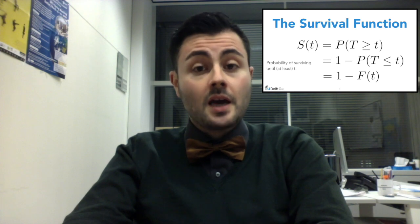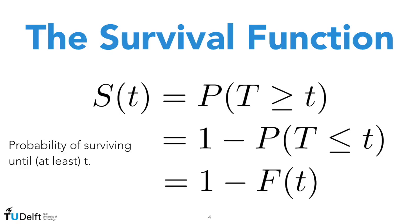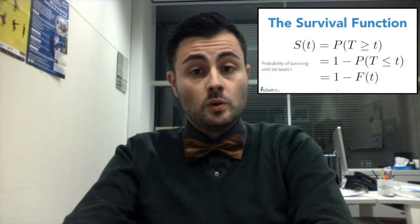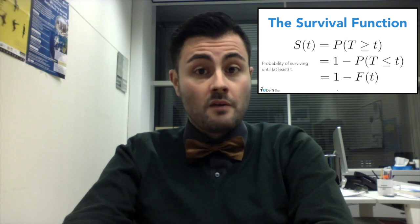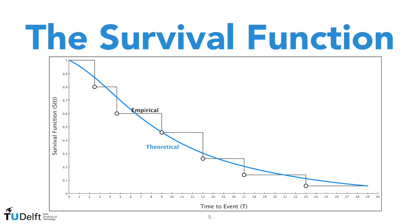A fundamental object in survival analysis is the survival function. Fixed at time small t, the survival function gives us the probability of surviving at least until time t. This is equal to the probability of our random variable capital T being larger than or equal to small t, and this probability can be expressed in terms of the CDF. In fact, this is equal to 1 minus the probability of not surviving until time t, that is 1 minus F of t. On your screen you can see two typical examples of survival functions.